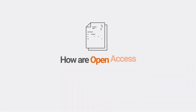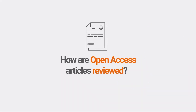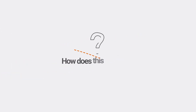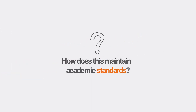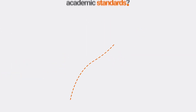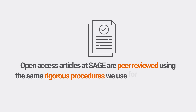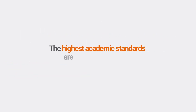How are open access articles reviewed? How does this maintain academic standards? Open access articles at SAGE are peer-reviewed using the same rigorous procedures we use for all our journals. The highest academic standards are always maintained.